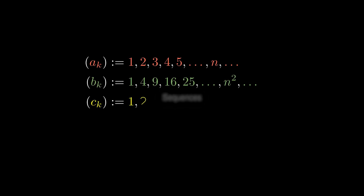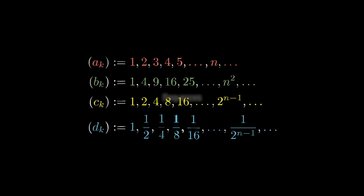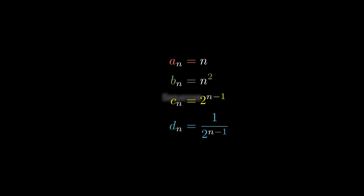If instead of adding 1 each time we multiply by 2 to get the next number, we get yet another sequence — the powers of 2. We could also take the same sequence but divide by 2 each time to get the next term. These are different sequences whose general nth terms are n, n squared, 2 to the n minus 1, and 1 over 2 to the n minus 1, respectively.